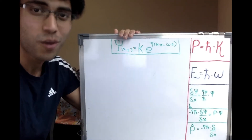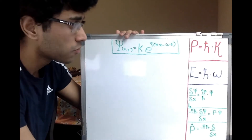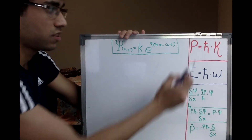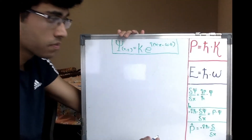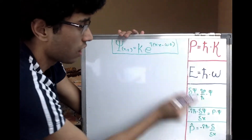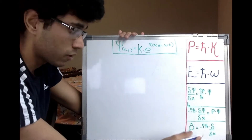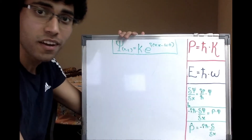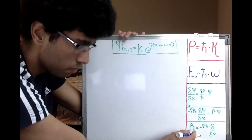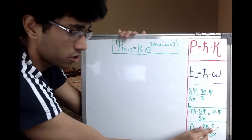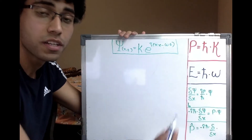In the last video, we talked about the momentum operator working on this plane wave function psi to give out the momentum as its eigenvalue. We also quoted de Broglie's equations: momentum is h-bar times k, and with Einstein, energy is h-bar times omega. We said that the partial of psi with respect to x gives ip over h-bar times psi. Multiplying by negative i h-bar gives us momentum times psi — so this is the momentum operator p-cap, equal to negative i h-bar times partial over partial x. Momentum is the eigenvalue here.